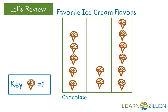It has three labeled categories: chocolate, vanilla, and cookie dough. And it has a key. This key shows one cone equals one. The key tells the quantity or how many of each the symbol represents. For example, in this graph there are two cones in the column labeled vanilla, so we know that there are two people that chose vanilla as their favorite flavor.